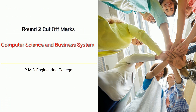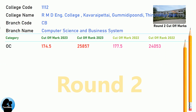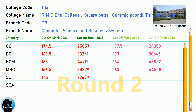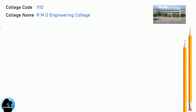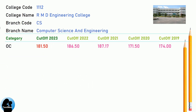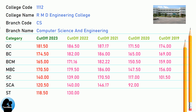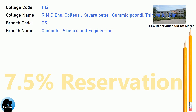DNEA 8.5 Reservation Cut-Off for RMB Engineering College in Computer Science and Business System. DNEA 7.5 Reservation Cut-Off for RMB Engineering College in Computer Science and Engineering. DNEA 7.5 Reservation Cut-Off for RMB Engineering College in Computer Science and Engineering.